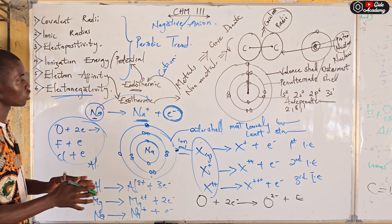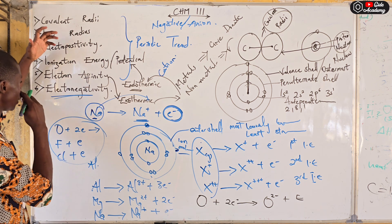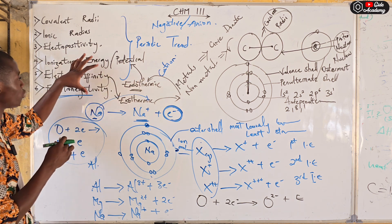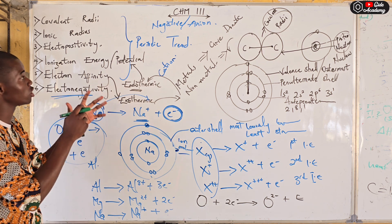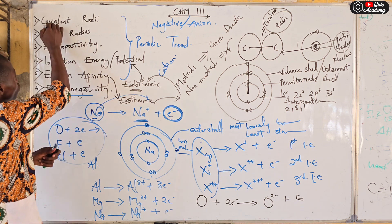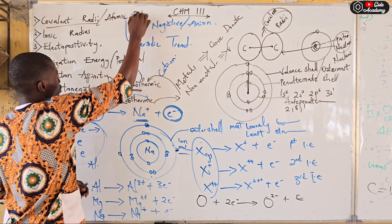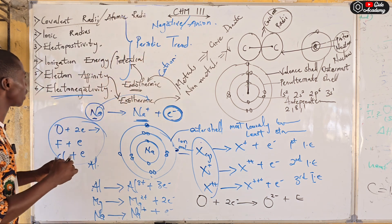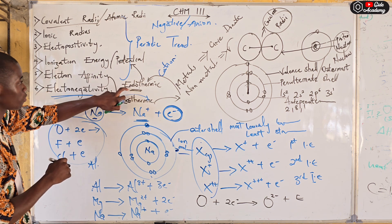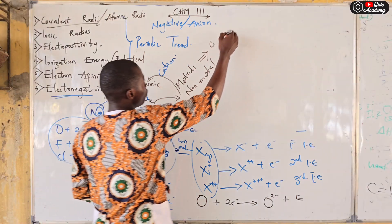In most cases, exam questions don't simply ask you to define covalent radii, ionic radii, electropositivity, electronegativity, or ionization energy. A question might instead ask: which of the following is an atomic radii? Please take note — covalent radii is also referred to as atomic radii, and ionization energy is also referred to as ionization potential, which is an endothermic process, while electron affinity is an exothermic process.